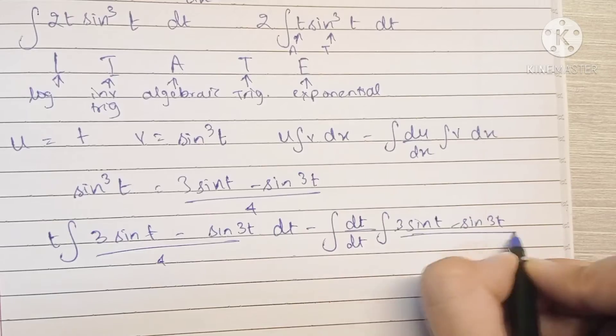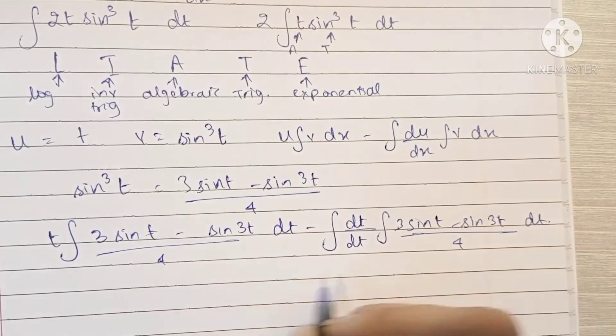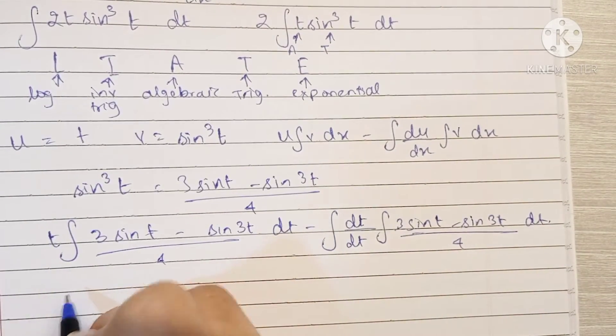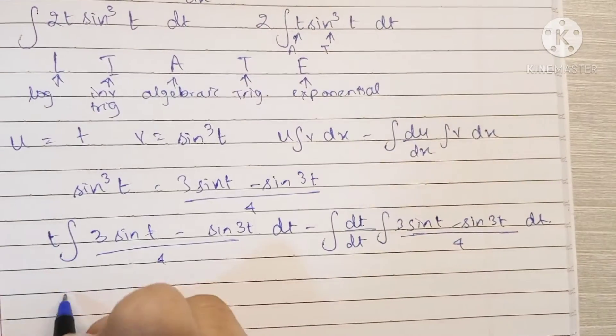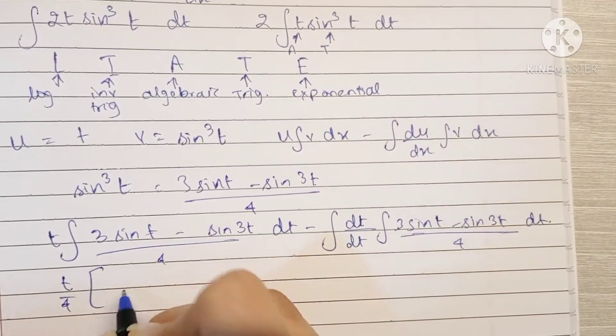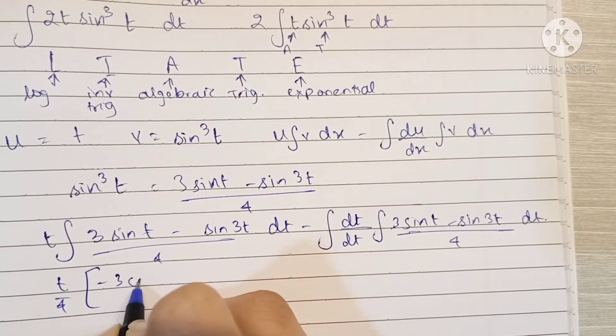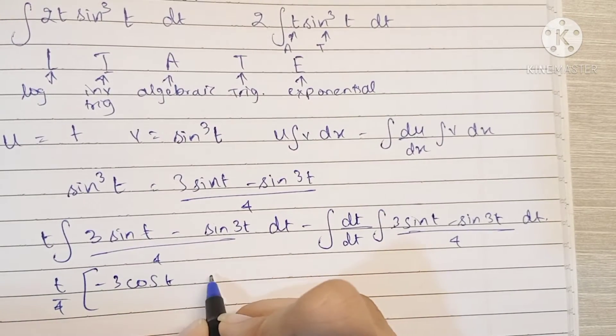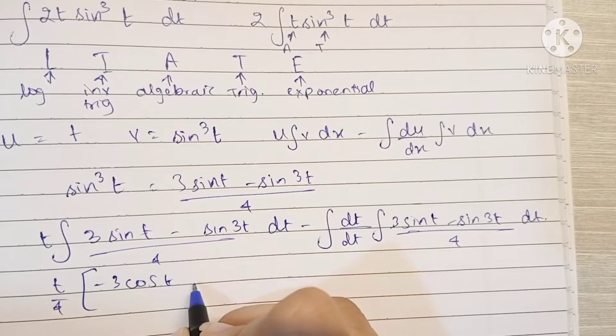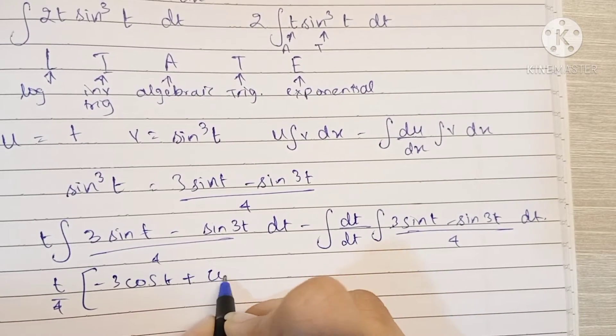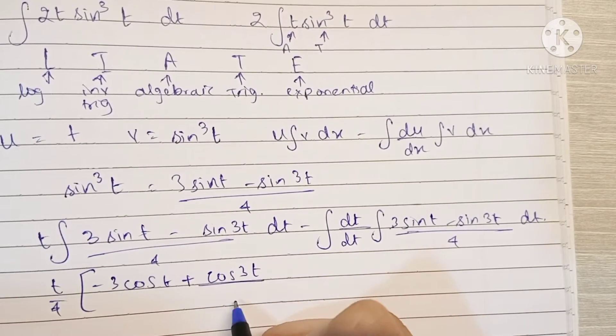I can take 1 by 4 outside, so t by 4. Integration of sine is minus cos, so this becomes minus 3 cos t. And the integration of sine again minus cos, so minus of minus becomes plus, plus cos 3t upon the coefficient of t which is 3.